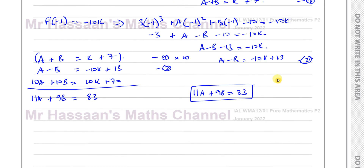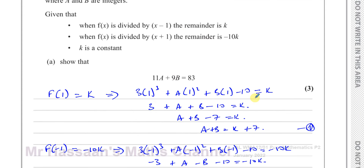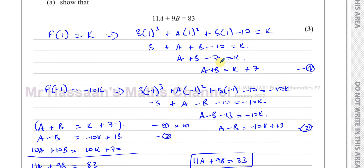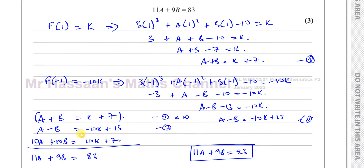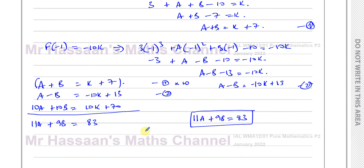To summarise part a: form two equations using the remainder theorem. When f(x) is divided by x minus 1, the remainder is k, meaning f(1) equals k. When divided by x plus 1, the remainder is negative 10k, meaning f(negative 1) equals negative 10k. Use those two equations, eliminate k by multiplying and adding, and you get exactly 11a plus 9b equals 83.